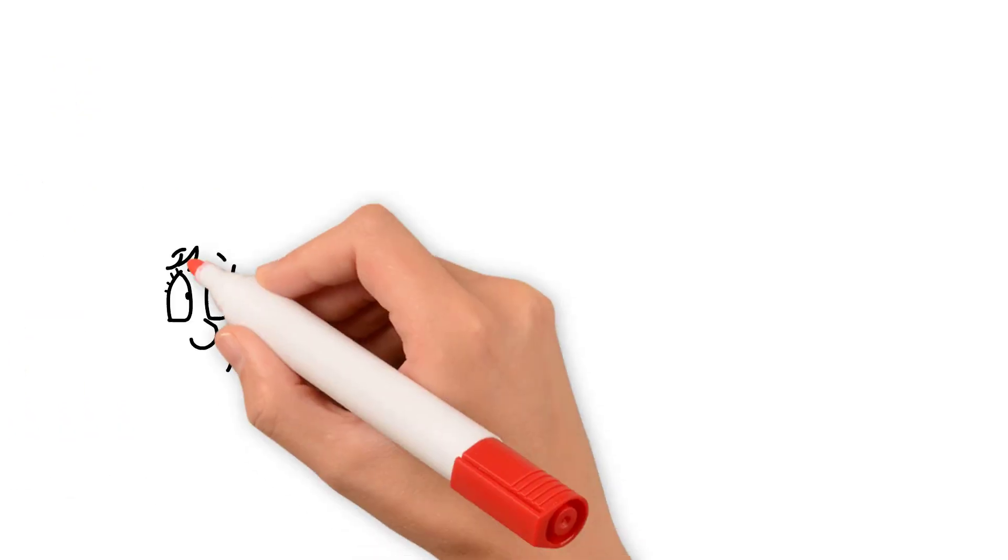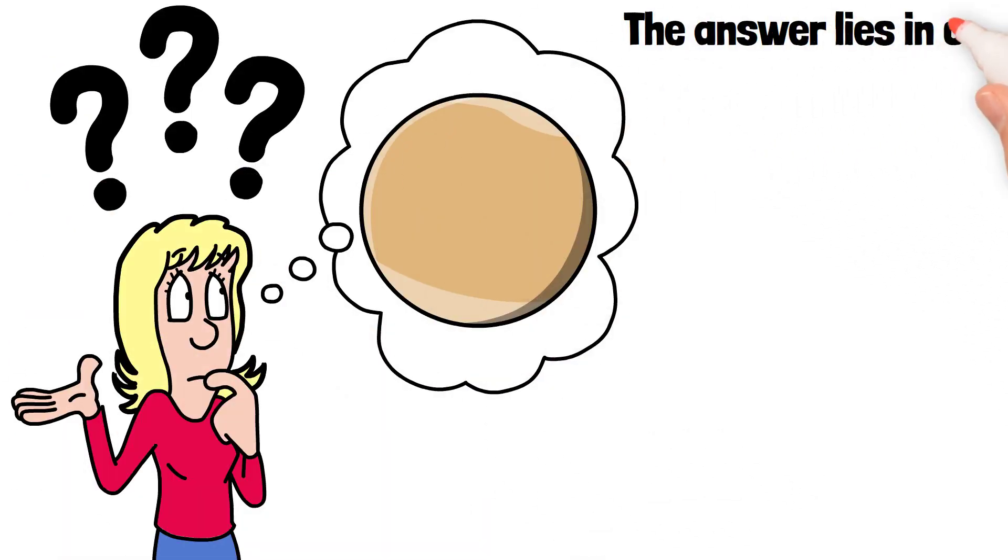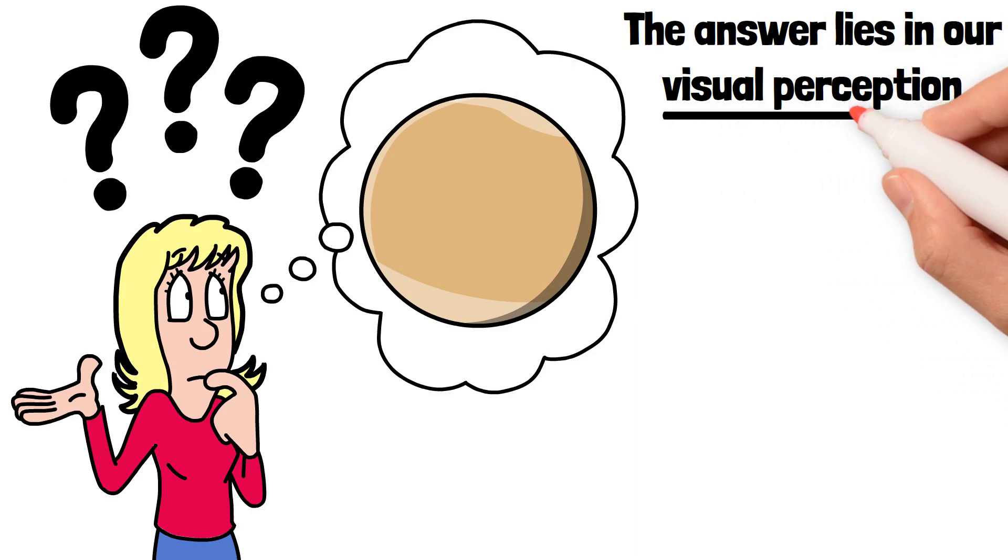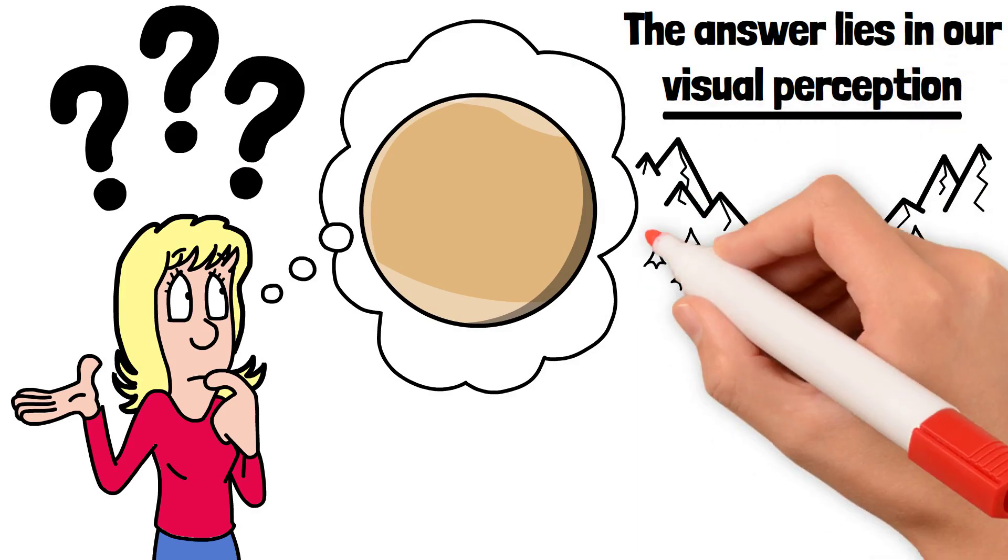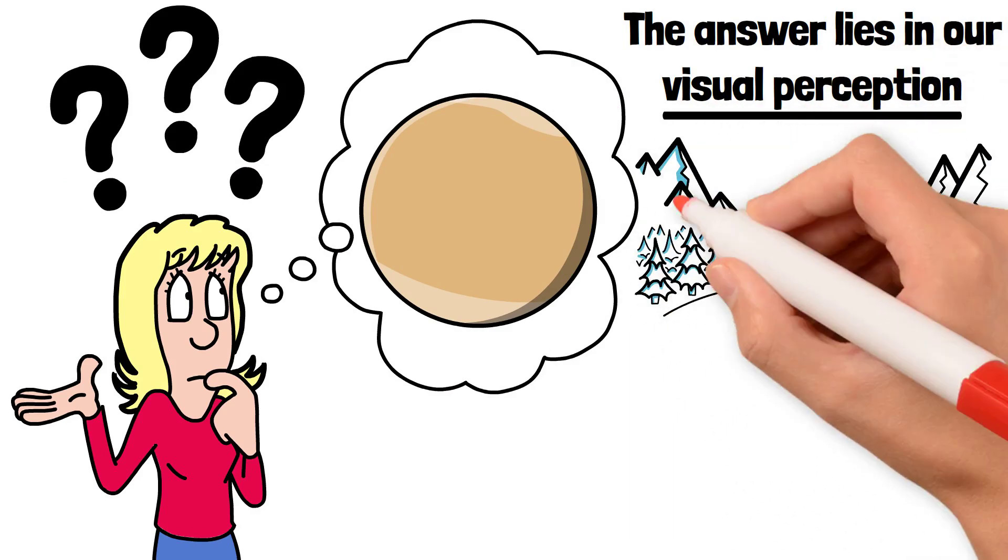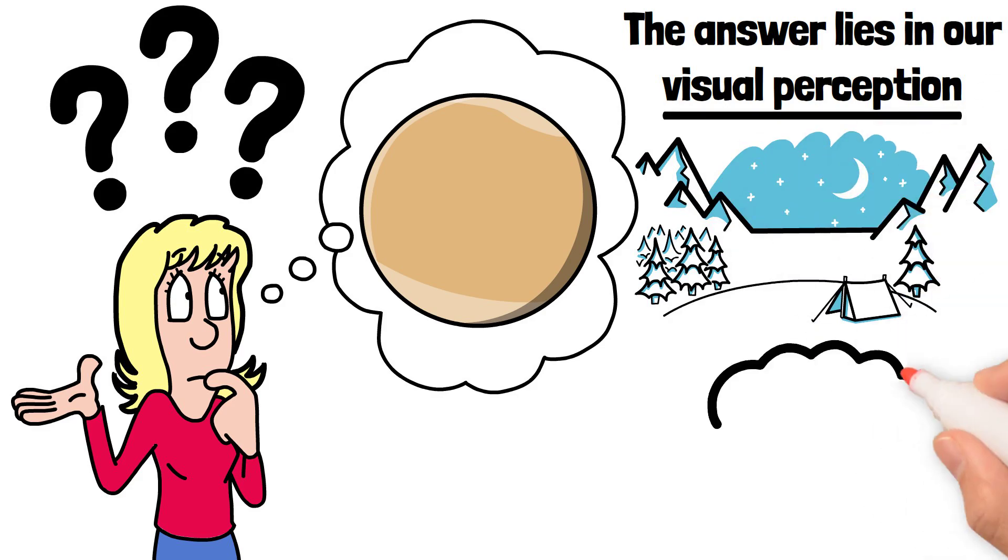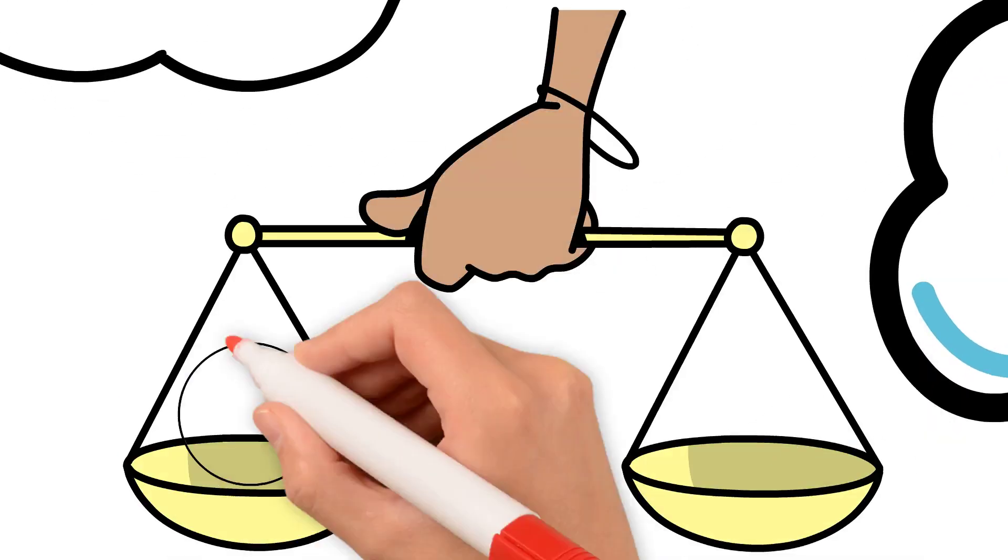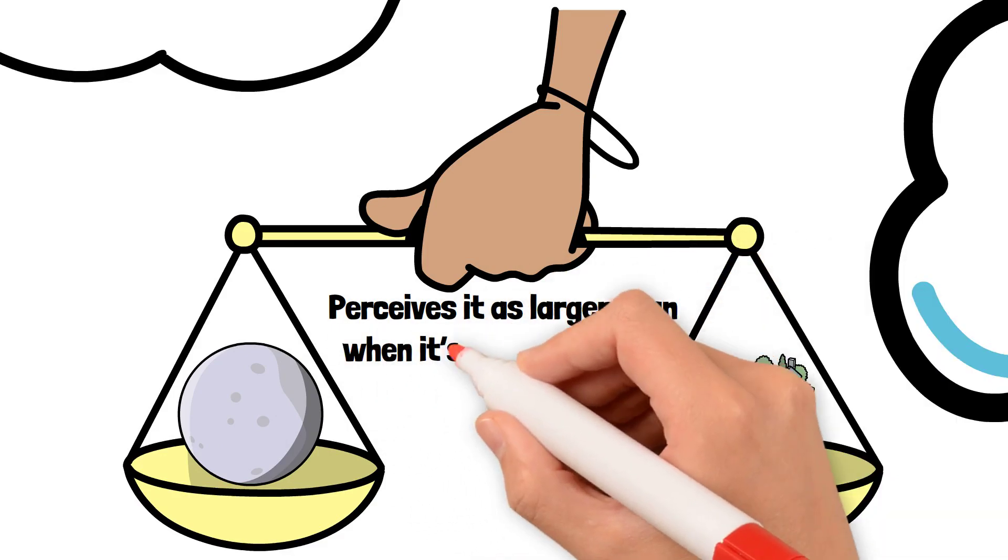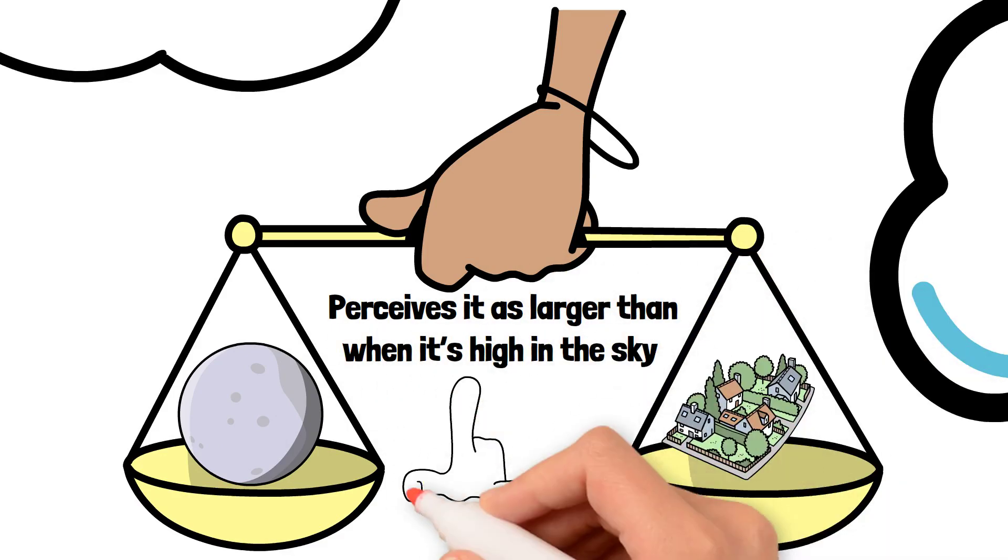So, why does it look bigger? The answer lies in our visual perception. When the moon is near the horizon, there are objects like trees, buildings, or mountains in the foreground. Our brain compares the moon to these reference points and perceives it as larger than when it's high in the sky, where it has no frame of reference.